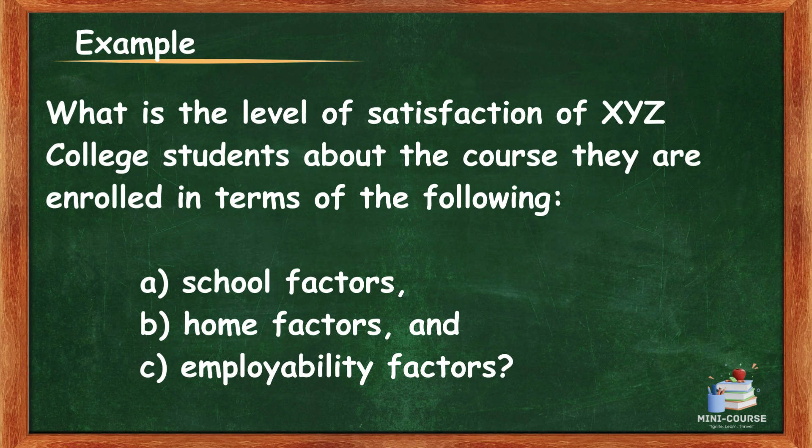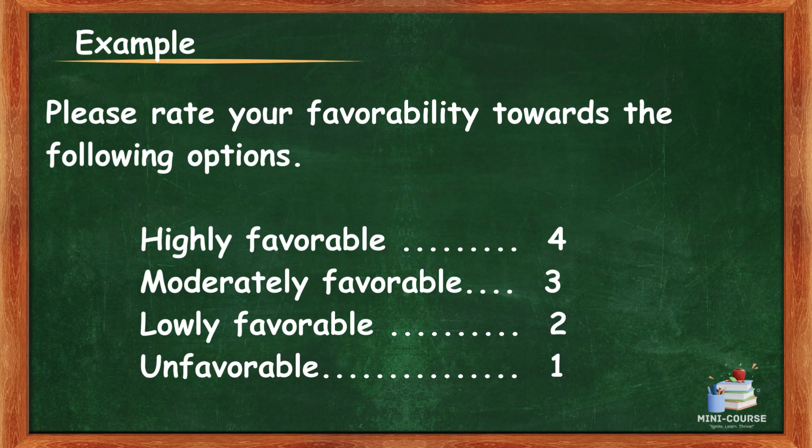Example Likert scale question: 'What is the level of satisfaction of XYZ college students about the course they are enrolled in, in terms of: A. School factors, B. Home factors, C. Employability factors?' Please rate your favorability: Highly favorable – 4, Moderately favorable – 3, Lowly favorable – 2, Unfavorable – 1.